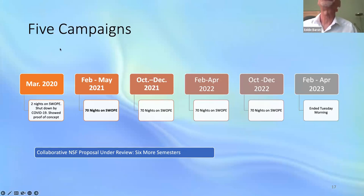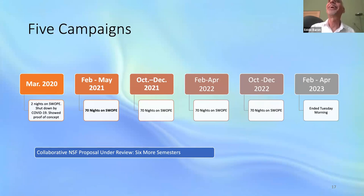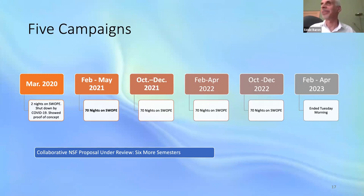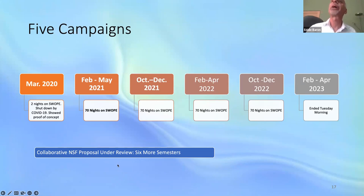POISE has had five campaigns — the fifth just ended yesterday morning. We started in March of 2020, had two nights, and were shut down by COVID-19, but it proved we could do it. We carried on with 2021A, 2021B, 2022A, 2022B, and 2023A, which just finished. We have a collaborative NSF proposal under review — fingers crossed — for six more semesters.